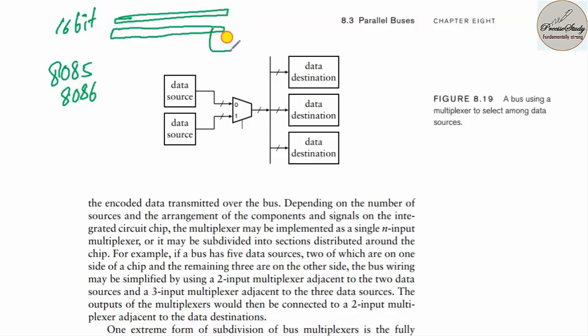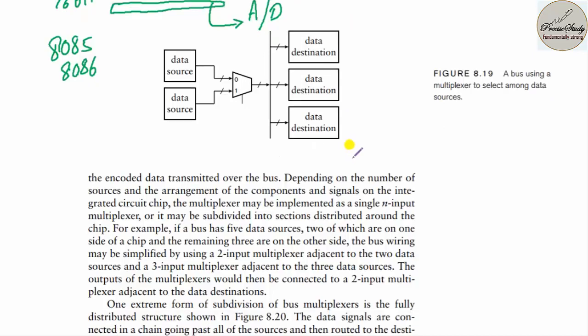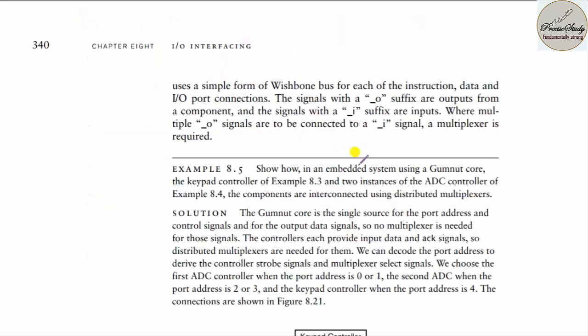The upper bus is used to send the address at one point in time, and at the next point to send data — this is multiplexing. This reduces hardware cost. First addressing is done, then data is sent, thereby reducing bus complexity. This is achieved using a multiplexer.